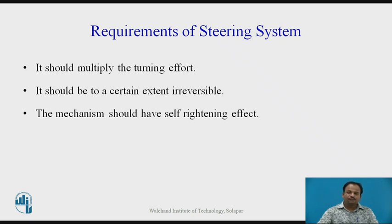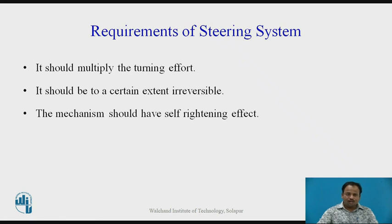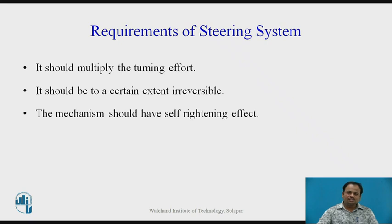Whenever the wheels are turning automatically, the steering wheel should not turn to the left or right — that becomes irreversible. To a certain extent, it must be irreversible; otherwise, the direction of the vehicle will change automatically, and that we don't want, as it may lead to an accident. Therefore, it should be, to a certain extent, irreversible. The mechanism should also have a self-righting effect: when you are giving a turn to the vehicle, the steering wheel should regain its original position — that is called the self-righting effect.